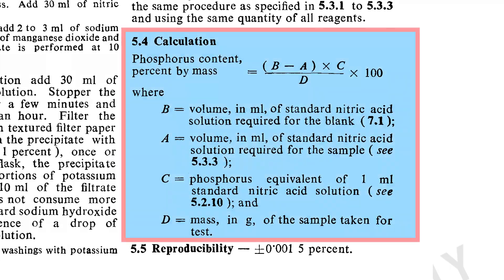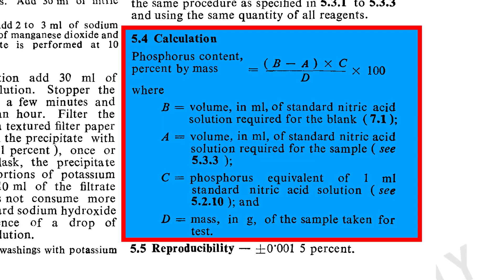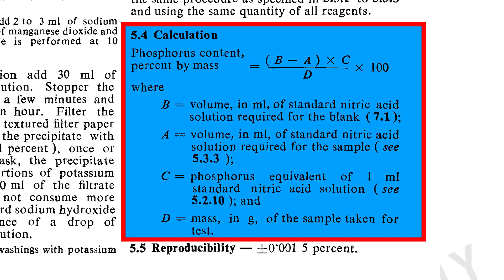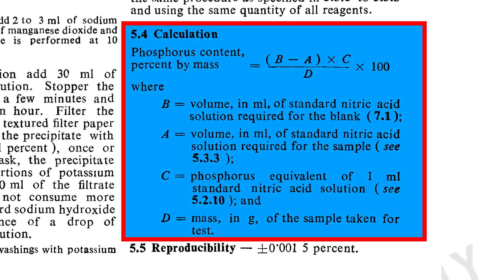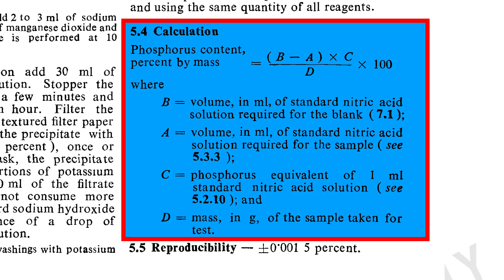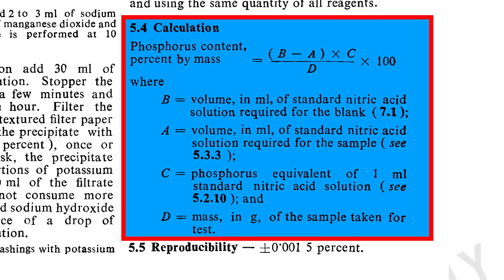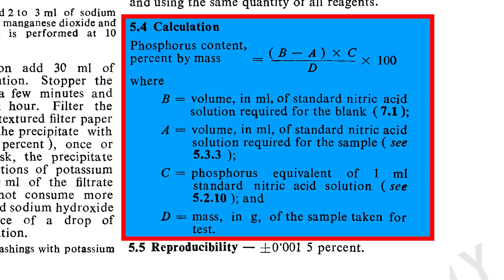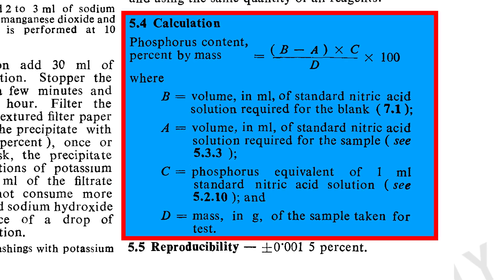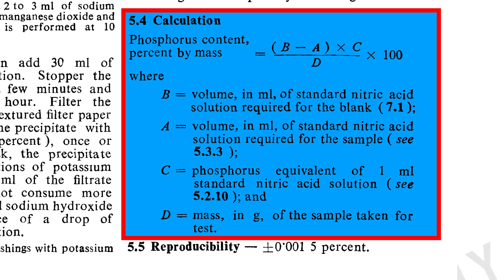To calculate the phosphorus percentage, start by subtracting the sample titre volume from the blank titre volume. Divide the resulting value by the weight of the sample taken for analysis. Finally, multiply this result by the factor of the nitric acid used during titration. This method provides a precise determination of the phosphorous content in the sample.